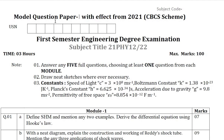Hello, my dear students. This video is regarding the model question paper discussing on first semester engineering physics. The subject code is 21PHY12/22. You should know that you should answer any five full questions using at least one question from each module.